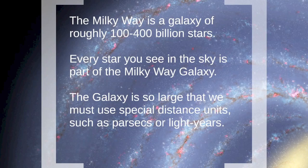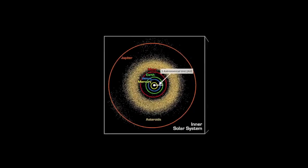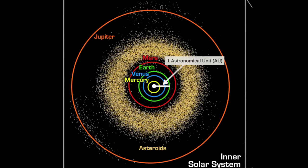But let's back up. An astronomical unit, or 1 AU, is the average distance between the Sun and the Earth, or 93 million miles. A light year is the distance a photon of light moving at 186,000 miles per second can travel in one year. A light year is roughly 6 trillion miles, which is also equivalent to roughly 63,000 astronomical units.